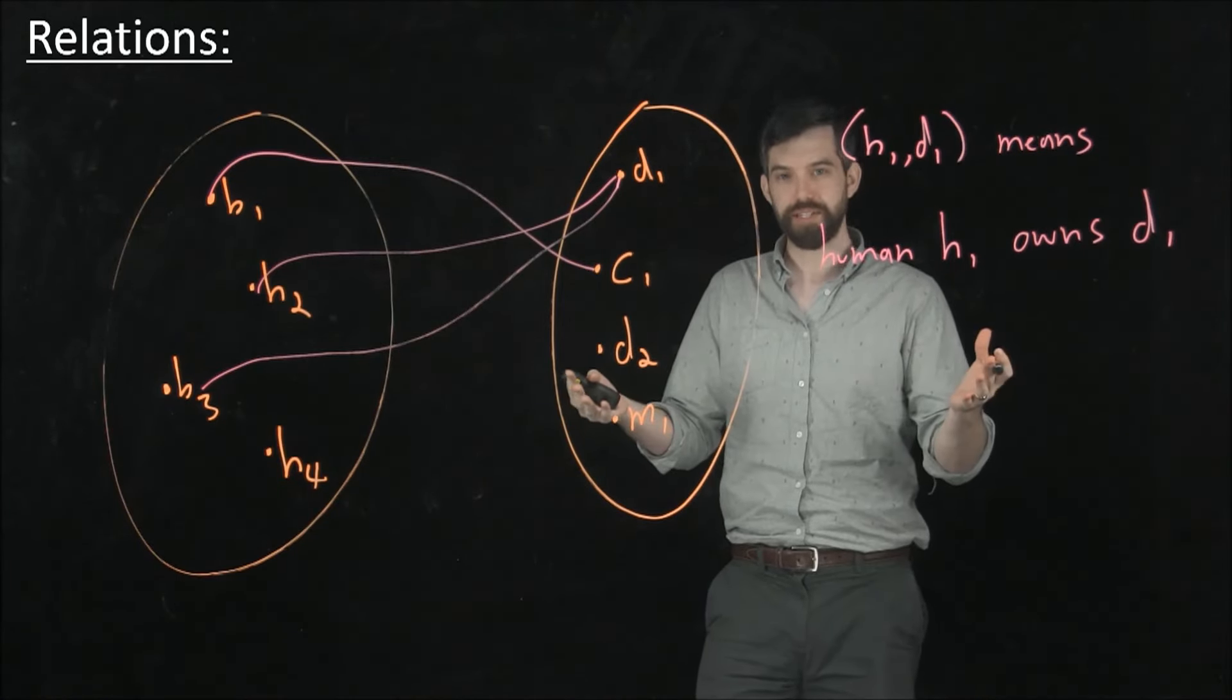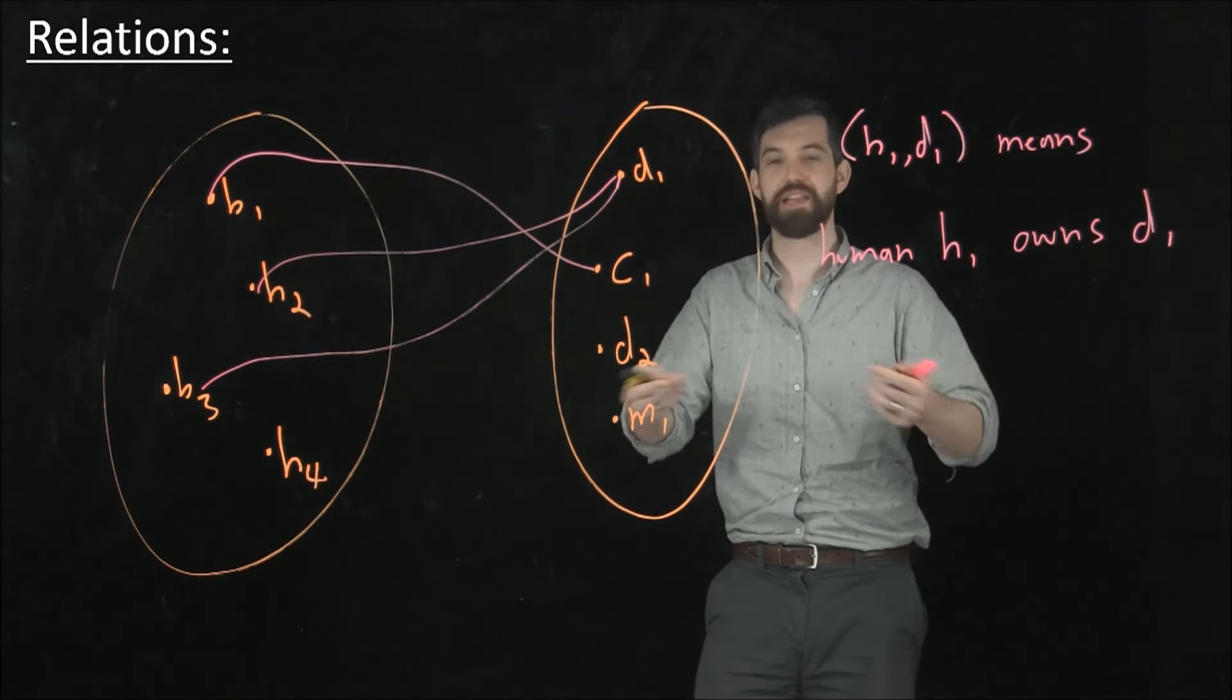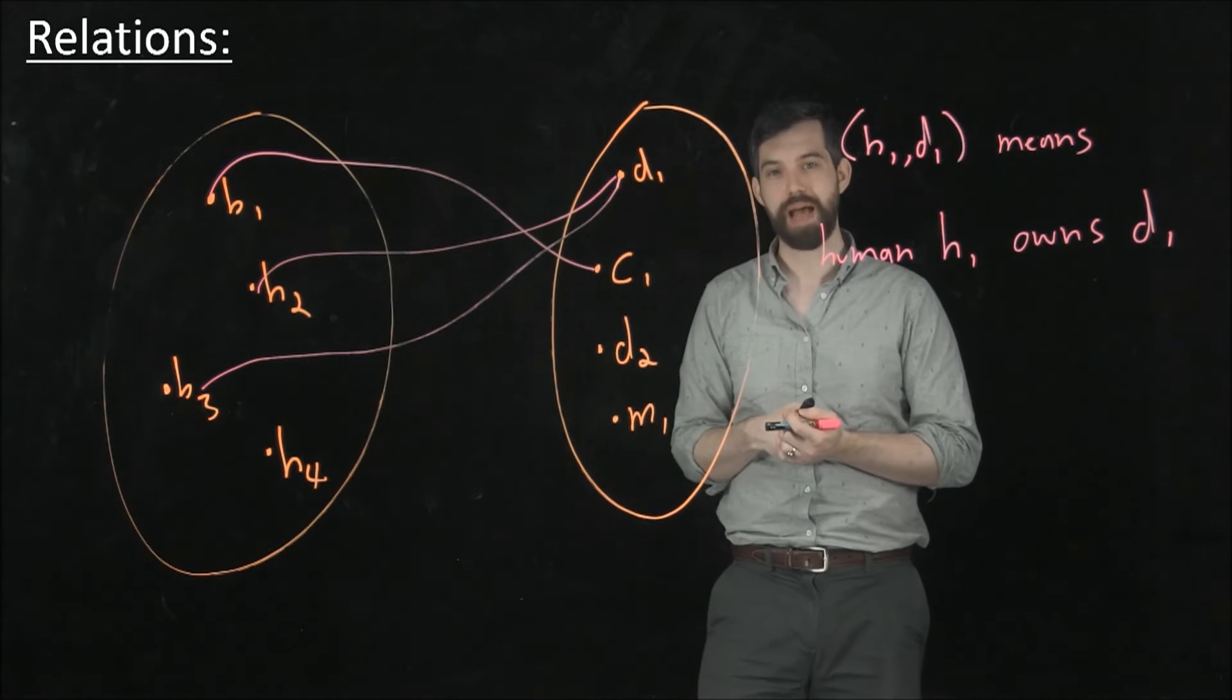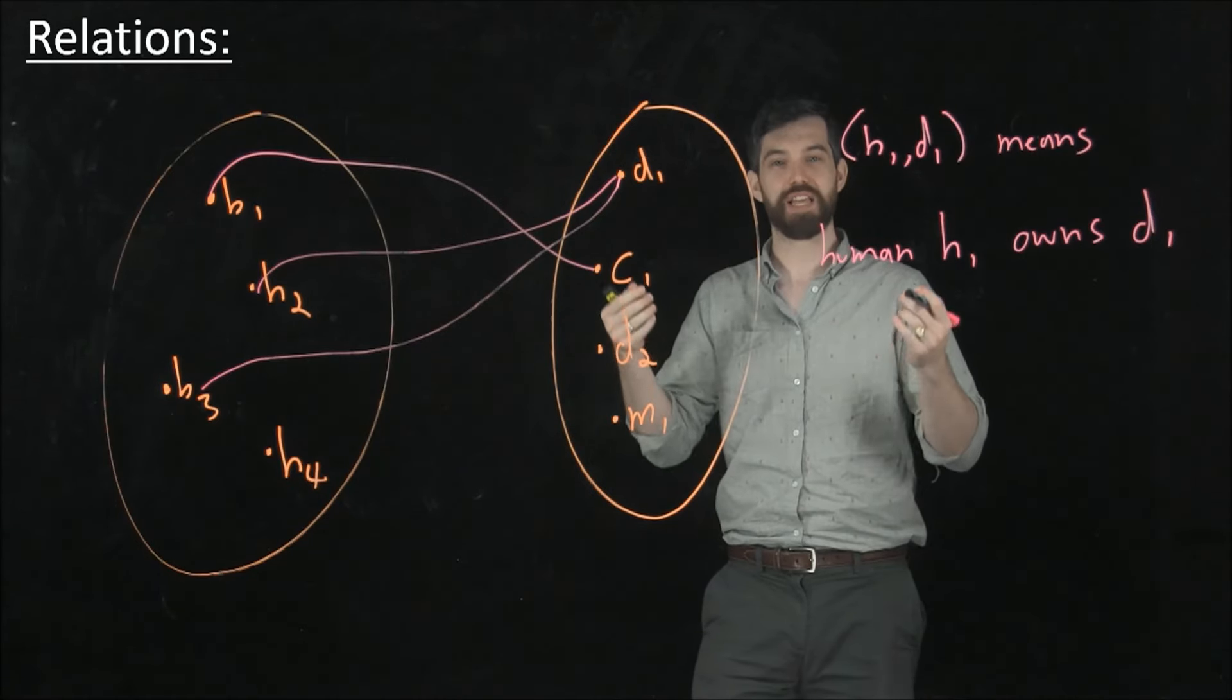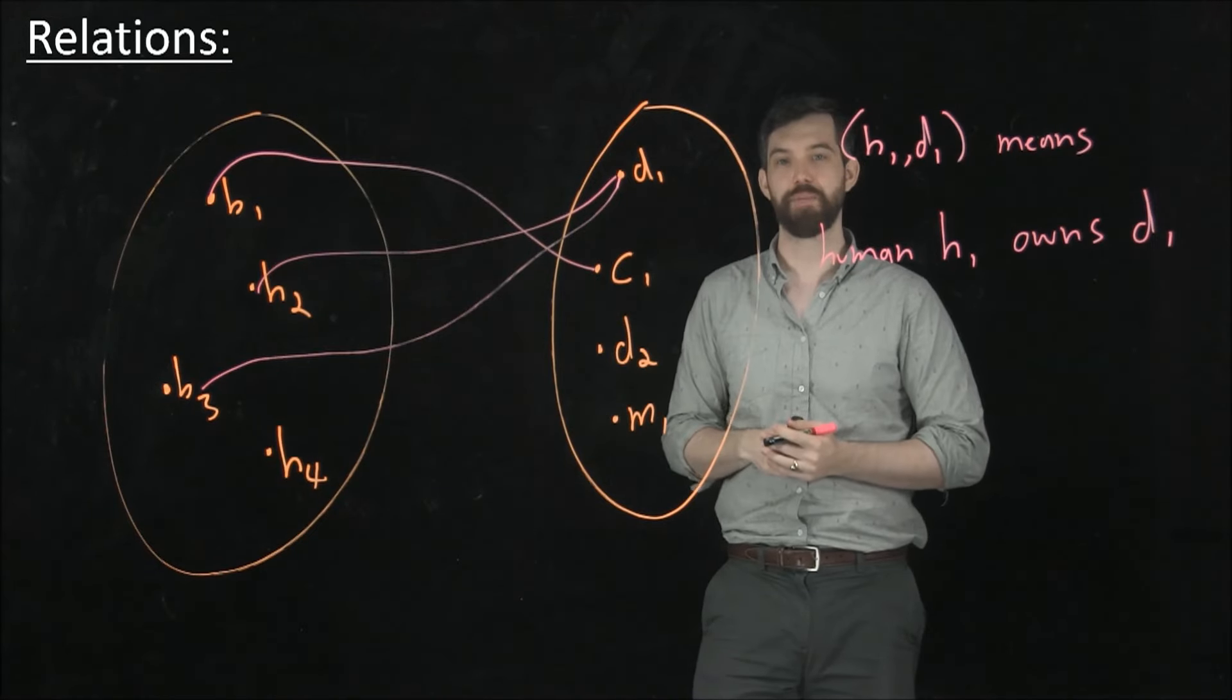So now we have these two examples, the less than inequality that allowed us to relate two integers, and then it's sort of this funny picture with humans and pets. So now what I want to have is a formal definition of what a relation is, and it's precisely what that's going to be.